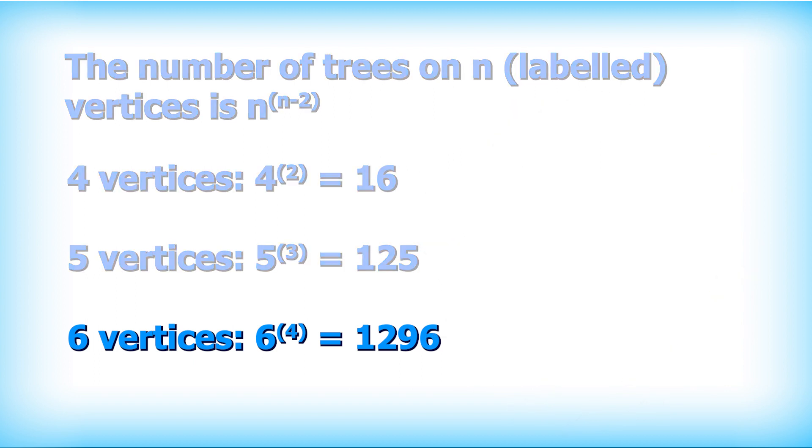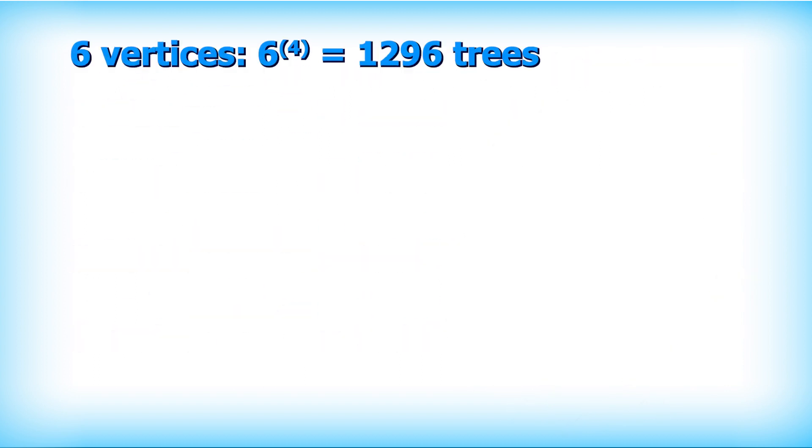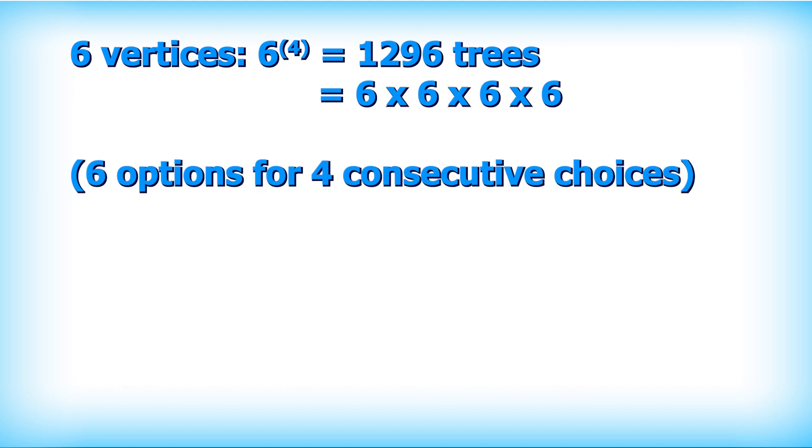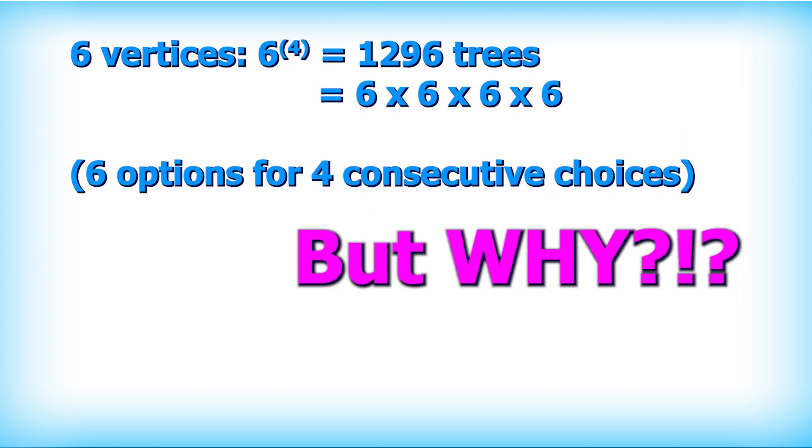Let's take the 6 to the power of 4 example and investigate a little bit. So 6 to the power of 4 is 6 times 6 times 6 times 6, that would mean that we have 6 options for 4 consecutive choices. But what are those 4 consecutive choices and why are there 6 of them?